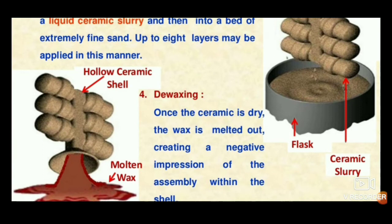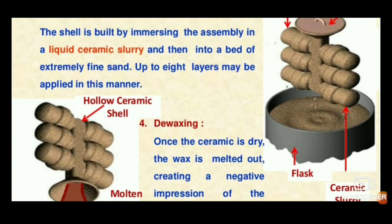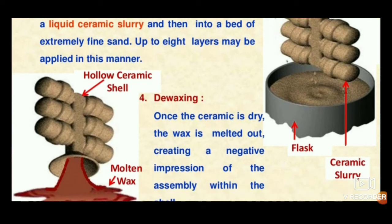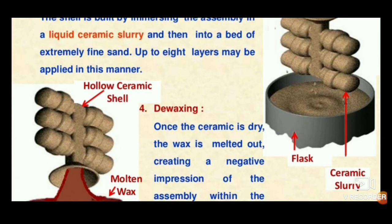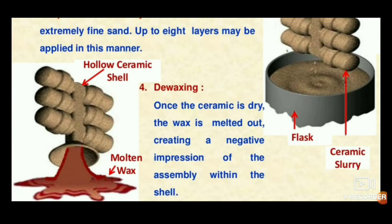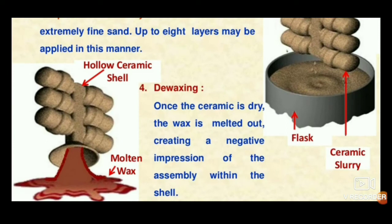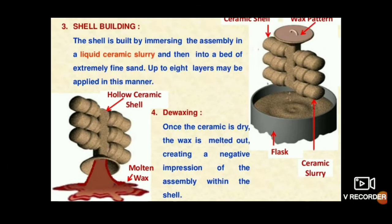De-waxing is an essential part of the process. If molten metal is poured before de-waxing, the accurate shape cannot be achieved. The wax is melted out using heat so that only the outer ceramic coating shell remains in the assembly.